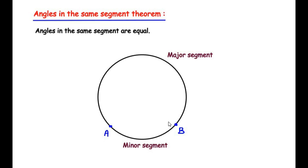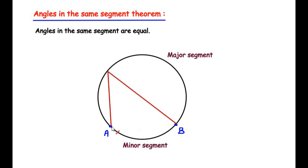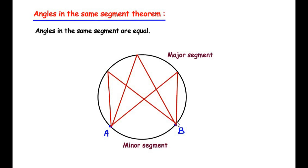Two points A and B on the circumference divide the circle into a minor segment and a major segment. Any number of angles made in the major segment using these two points will all be equal. So if one angle is 30 degrees, all other angles in the same segment are also 30 degrees. This is the angles in the same segment theorem.